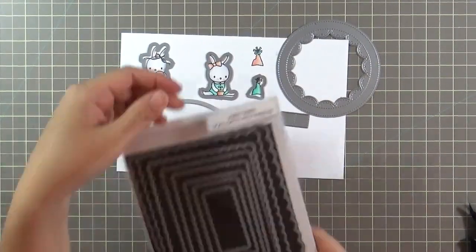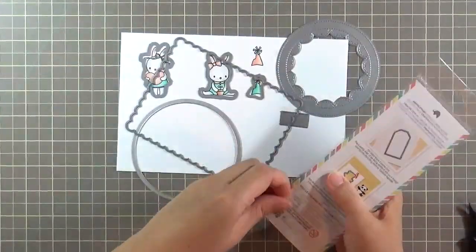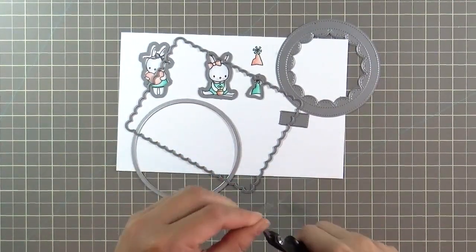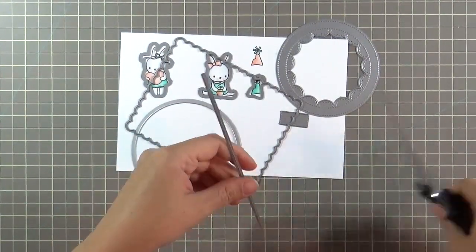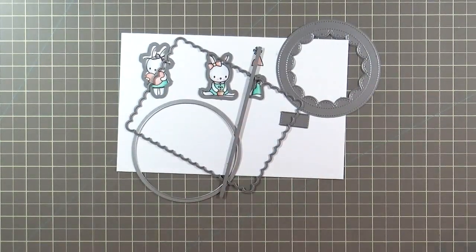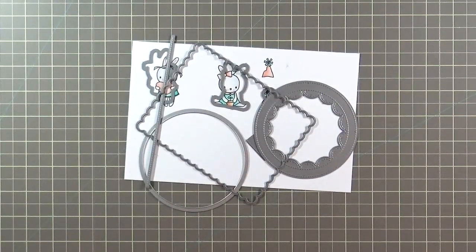I'm using the scalloped Columbus Circle tag. I have a set of scalloped rectangles from Lawn Fawn that you see. And then I have a plain circle die from Sizzix. And also this stitched fine trimmings die that I showed you earlier from Mama Elephant. So these are all the dies that I'm going to be using to die cut this card. It seems like a lot, but it really isn't that much.